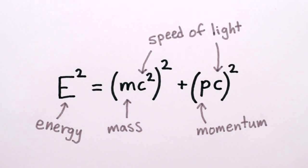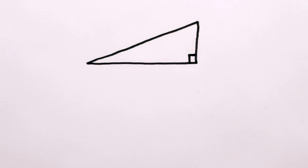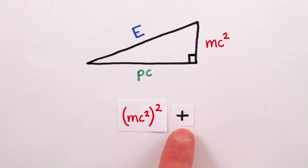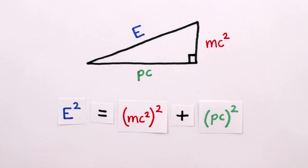This might all seem a bit confusing, but in fact you can draw it as a right triangle with sides E, mc squared, and p times c. And just use the Pythagorean theorem a squared plus b squared equals c squared to give you the equation.